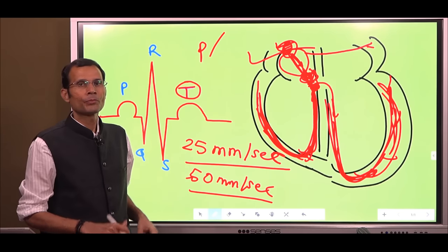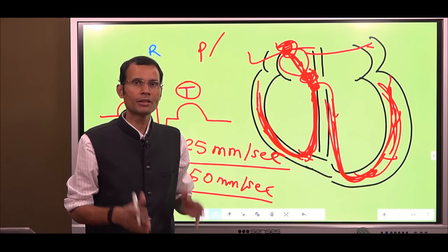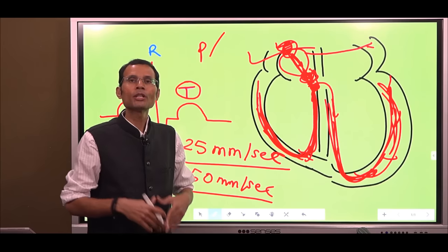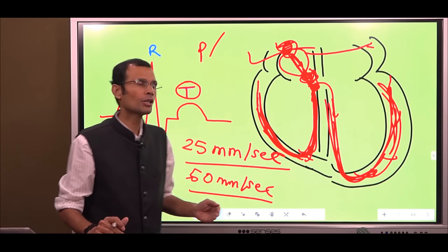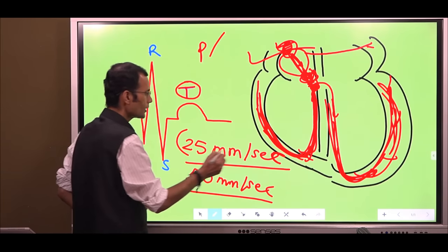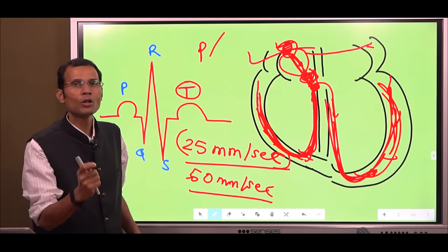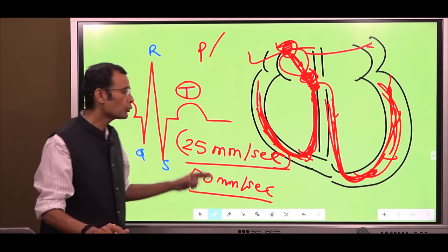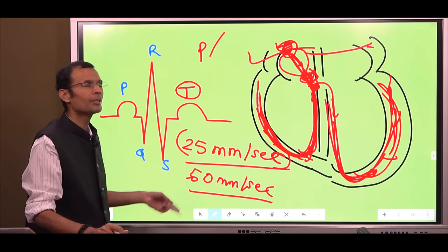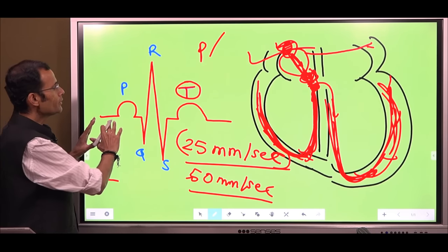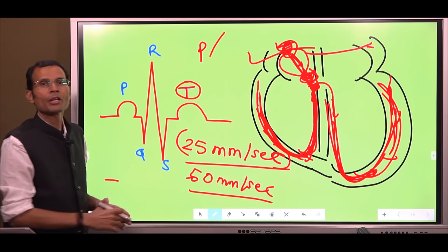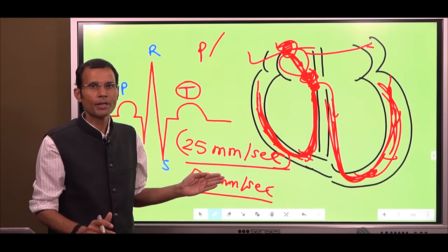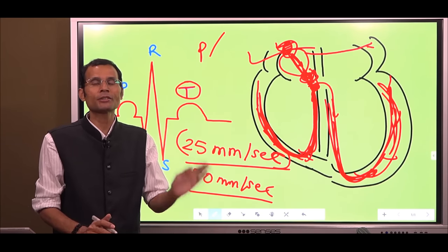To summarize: atrial repolarization does happen. It simply does not get recorded on a normal ECG because of the standard paper speed. If we change the speed of the paper to 50 millimeters per second, all the waves will get scattered, and then we can also obtain the P' wave — the wave of atrial repolarization.